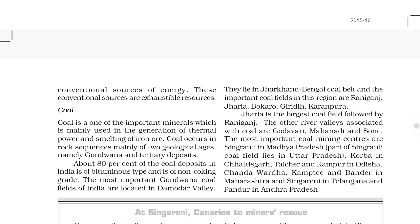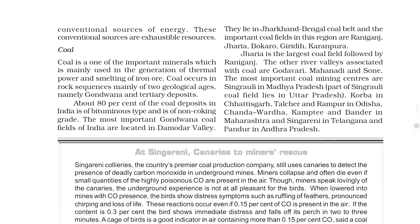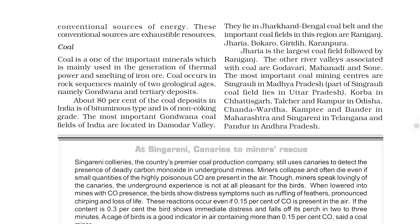Now let us start with conventional sources of energy. First is coal. If you are asked to write a short note on coal, the things you can mention are: what coal is used in, the types, ages, and distribution. Coal is used in thermal energy, domestic cooking, brick making, coal tar for road making, and steam engines. There are four types of coal: anthracite, bituminous, lignite, and peat.